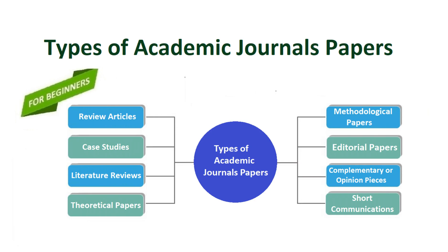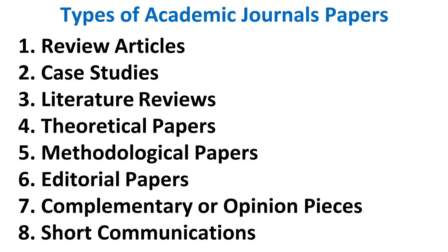Types of Academic Journal Papers. There are eight types of academic journal papers: review articles, case studies, literature reviews, theoretical papers, methodological papers, editorial papers, complementary or opinion pieces, and short communications.